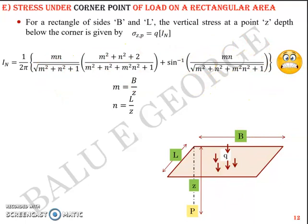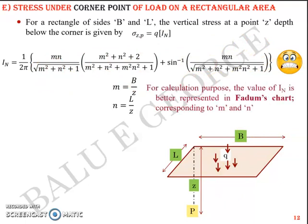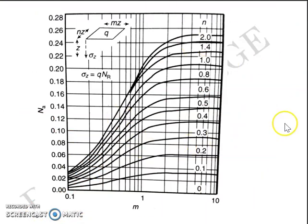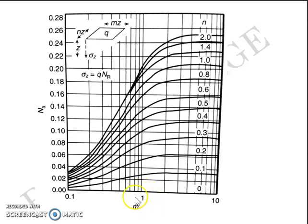You don't need to memorize the IN equation — you can obtain IN from a chart called Fadum's chart, which gives the influence value based on m and n. For example, to find IN for m = 1 and n = 0.5, locate m on the chart, go up to where the curve for n = 0.5 intersects, read off the y-axis intercept, and IN ≈ 0.12.